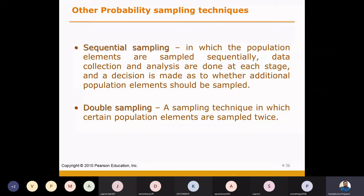Let me explain sequential sampling, in which the population's elements are sampled sequentially. Data collection and analysis are done at each stage, and a decision is made as to whether additional populations should be sampled or not.